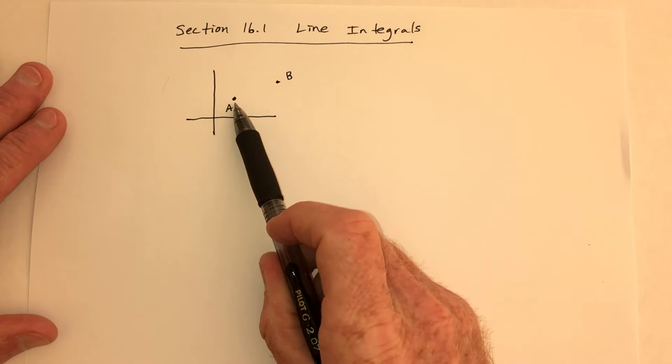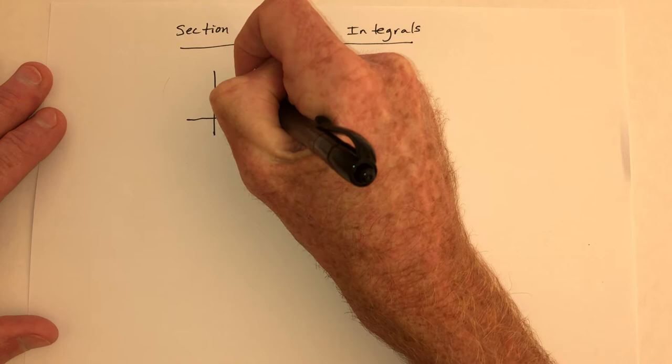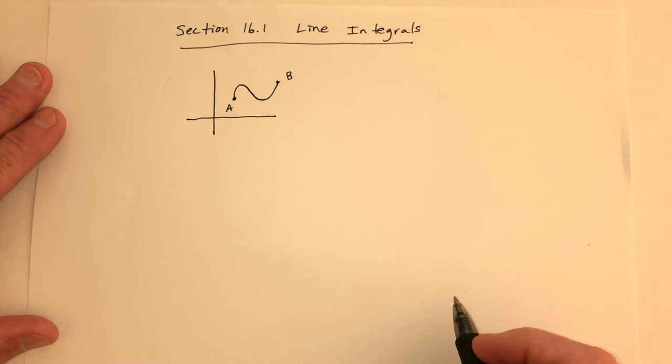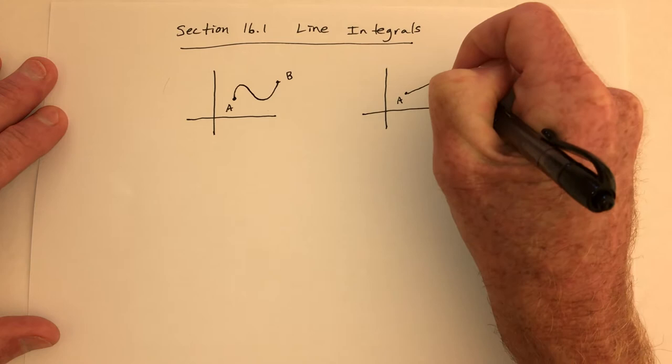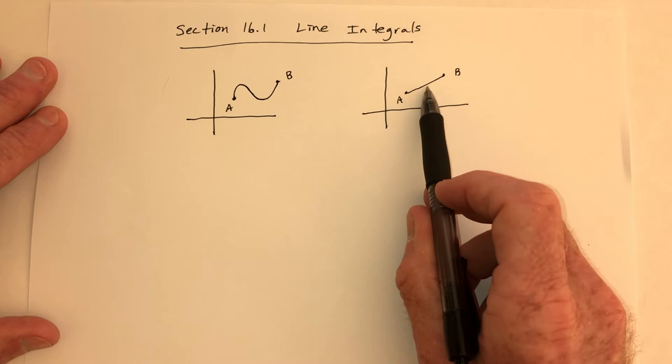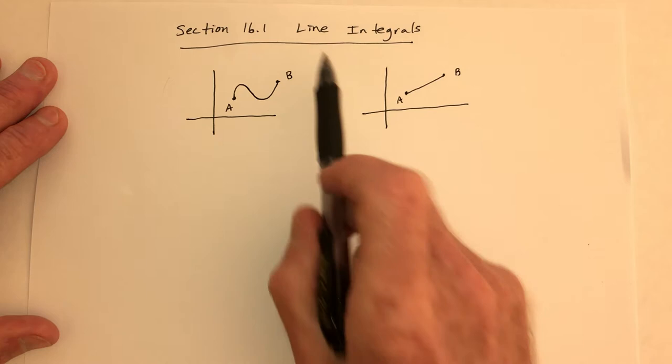Section 16.1: Line Integrals. Suppose you're going to go from point A to point B. Perhaps you're on a hike through the forest and you decide to take a curved path, or you might want to get there as quickly as possible and go along a straight line. The arc length of the curved path would be longer than the straight line, which is, of course, the shortest and fastest path.